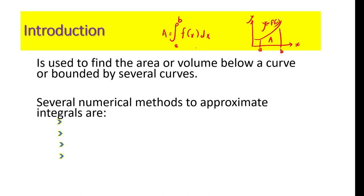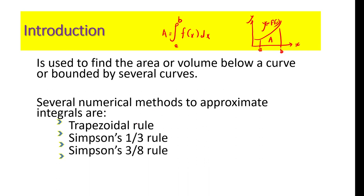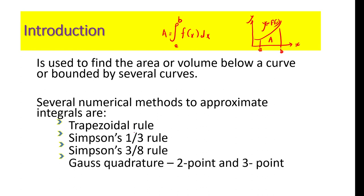If the integral cannot be integrated directly, we need numerical integration. We have the trapezoidal rule, Simpson's one-third, Simpson's three-eighths, and Gauss quadrature — two-point and three-point. These are numerical methods used to approximate the integral when we cannot integrate directly.